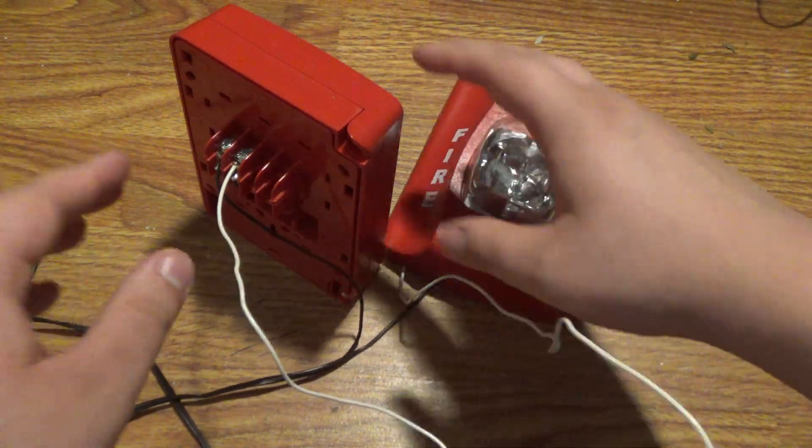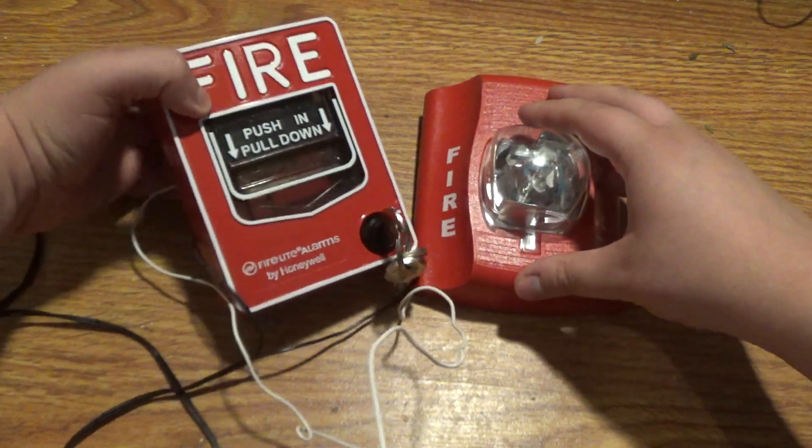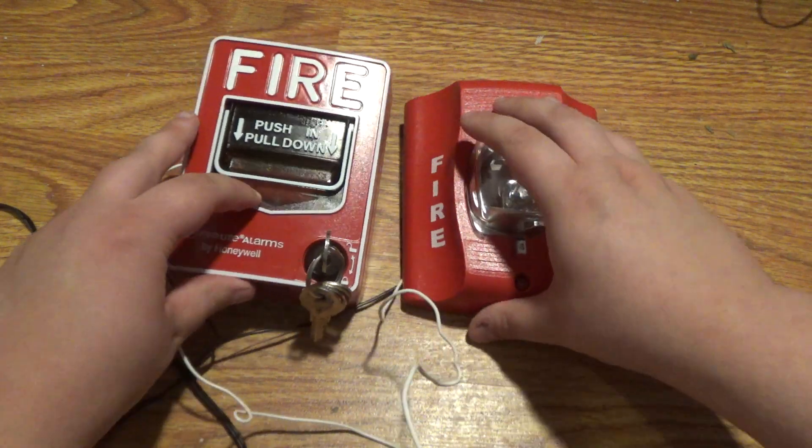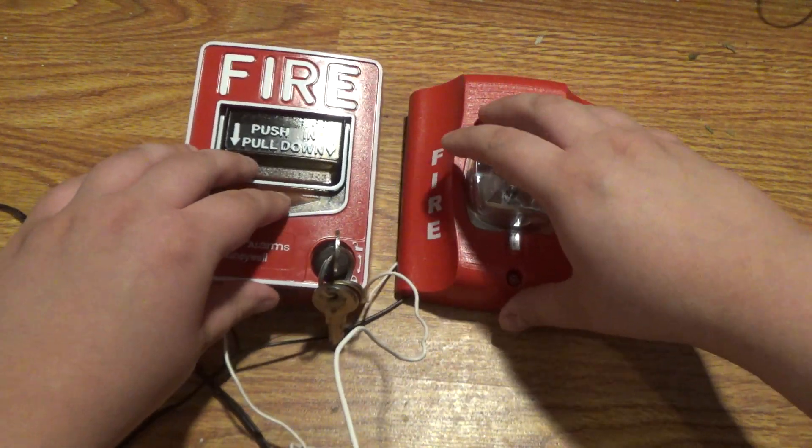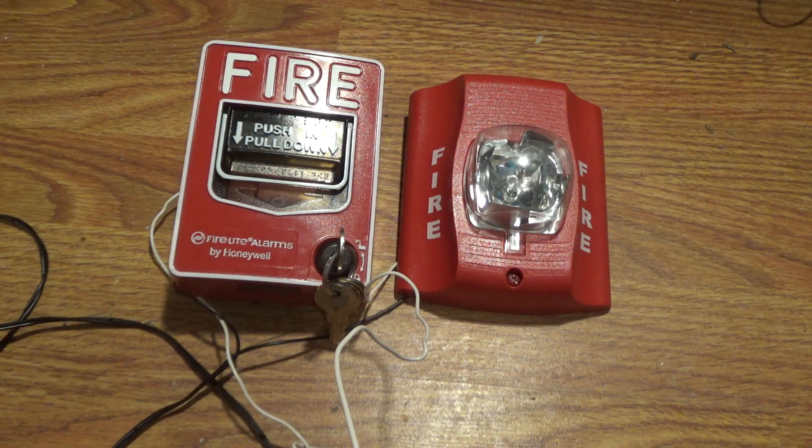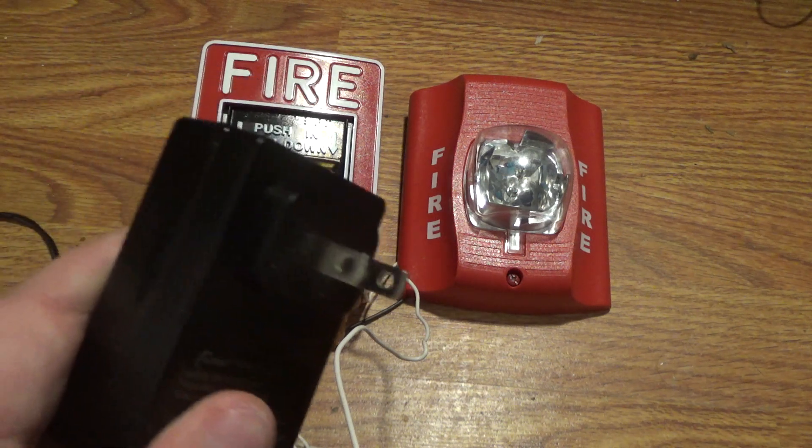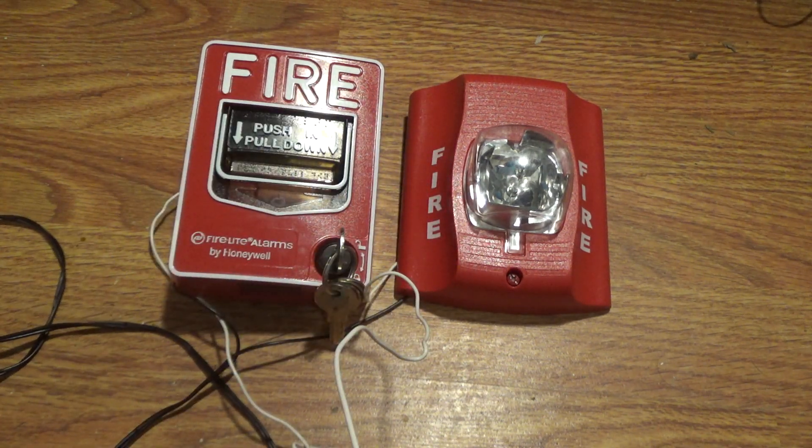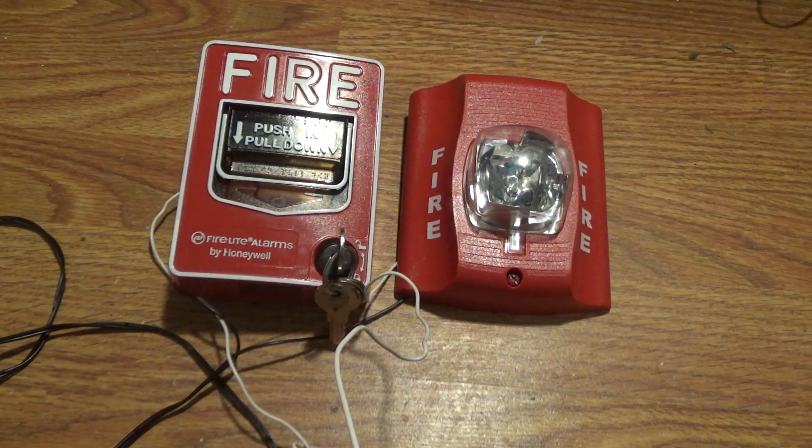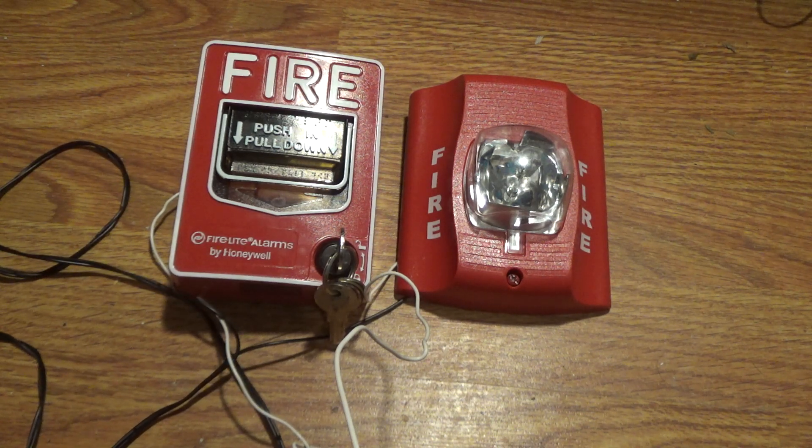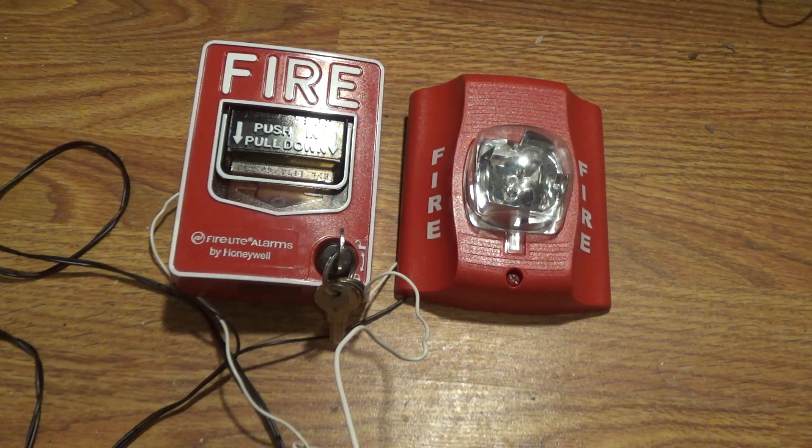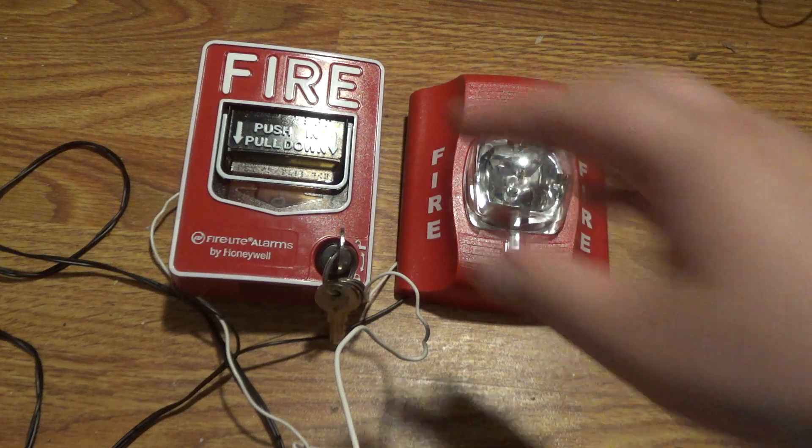And then, you flip over the pull station, make sure the wires are not touching anything. And now, the wiring is complete, and now we're ready to apply power. So, we're going to plug it into my surge suppressor, and we're going to pull the pull station and see if it works. Okay, power's on, and now, for the moment of truth, let's test it.